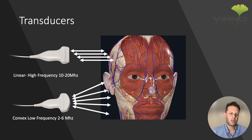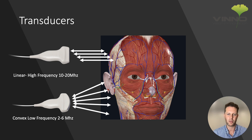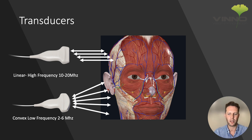Convex transducers typically have a lower frequency which gives them better penetration, but they have lower resolution as well. High frequency transducers give you higher resolution, lower frequency transducers give you better penetration. That's the reason why we use high frequency linear transducers in aesthetics.